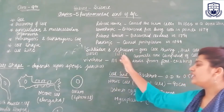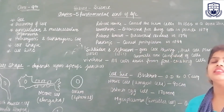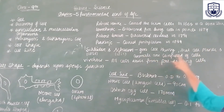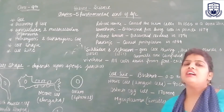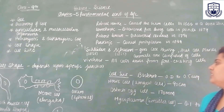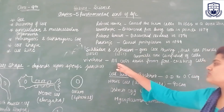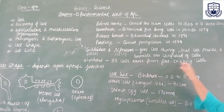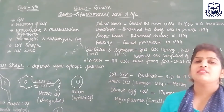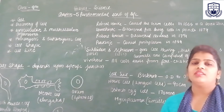1838 और 1855 में Schleiden और Schwann ने cell theory दी, जिसमें बताया कि all plants and animals are composed of cells — जितने भी plants और animals हैं, वो सब cell से मिलकर बने हैं। Then Robert Virchow ने बताया: All cells arise from pre-existing cells — मतलब पहली वाली cell से ही नई cell बनती है।